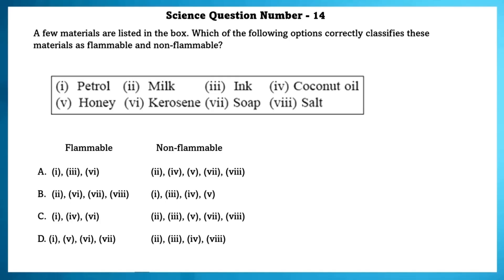Science question number 14. A few materials are listed in the box. Which of the following options correctly classify these materials as flammable and non-flammable? Petrol, kerosene, coconut oil are flammable, while the others are non-flammable.